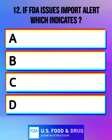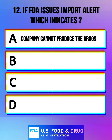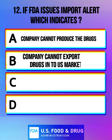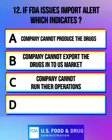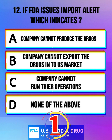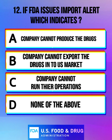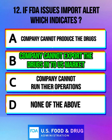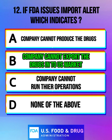If FDA issues an import alert, which indicates: Option A: company cannot produce the drugs. Option B: company cannot export the drugs into the US market. Option C: company cannot run their operations. Option D: none of the above. And the correct answer is option B — company cannot export the drugs to the US market.